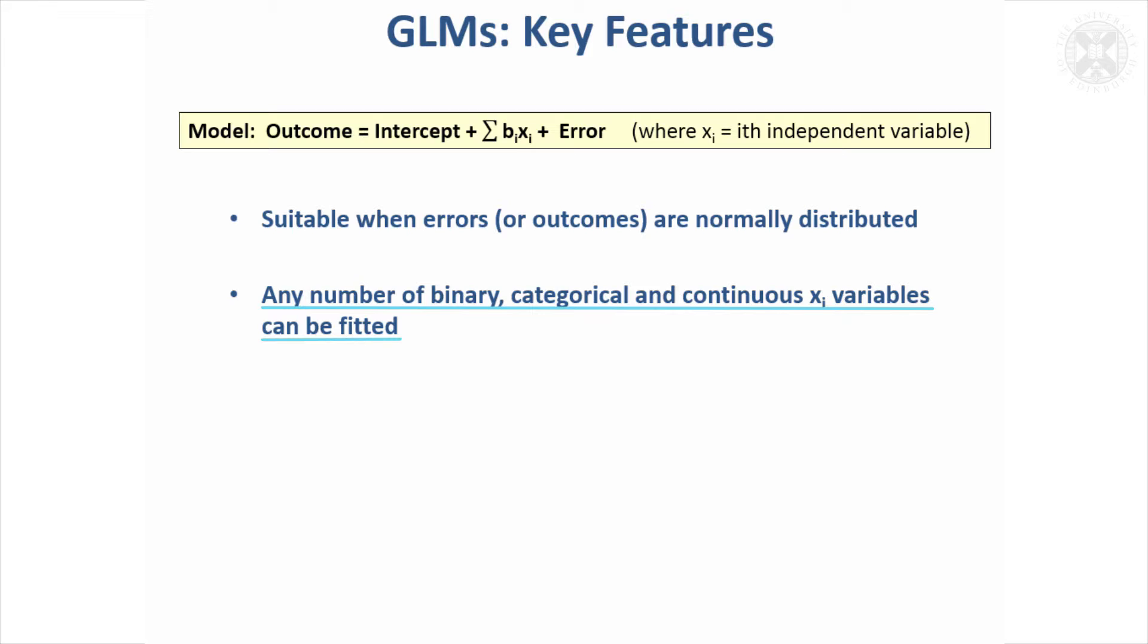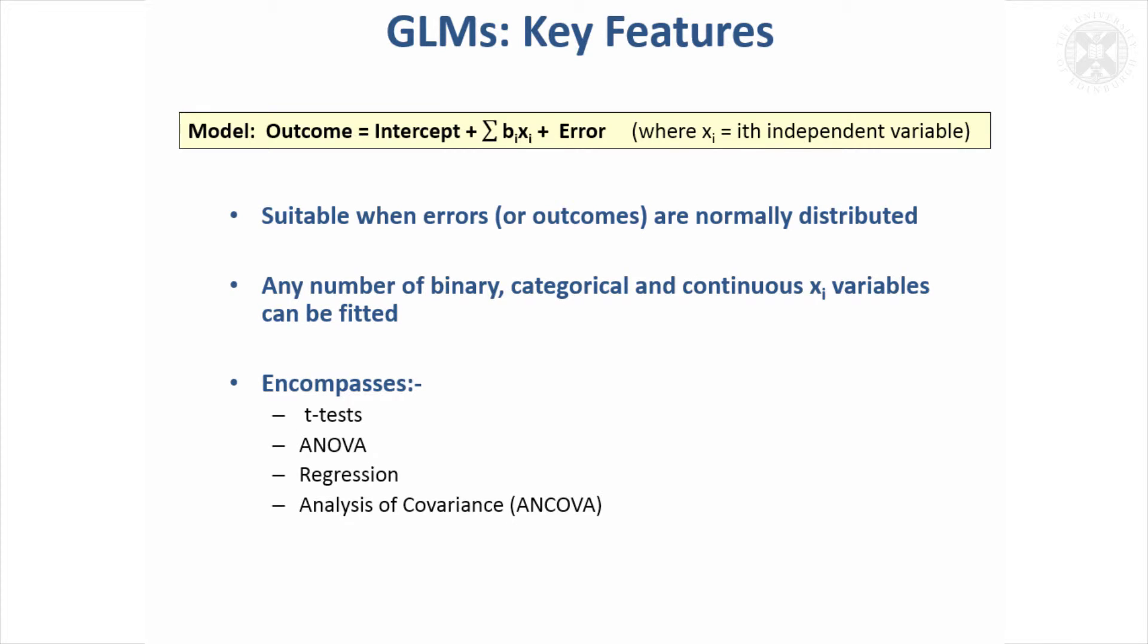You can have any number of variables on the right-hand side of the equation—binary variables with two possible outcomes, several categories, or continuous variables. T-tests and paired t-tests are actually encompassed in the broad umbrella of general linear models, as are ANOVA, regression, and analysis of covariance. They're a broad class of models which, if you can assume your errors are normally distributed, have many uses and a lot of flexibility.